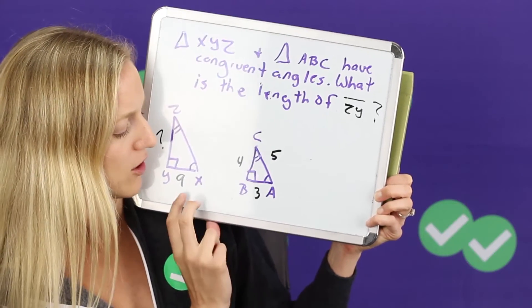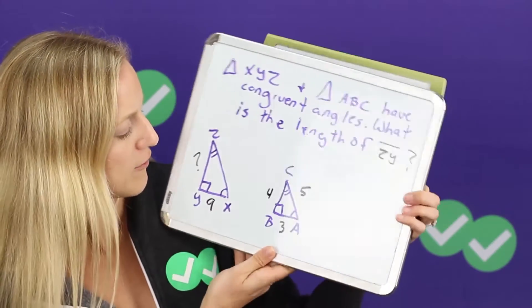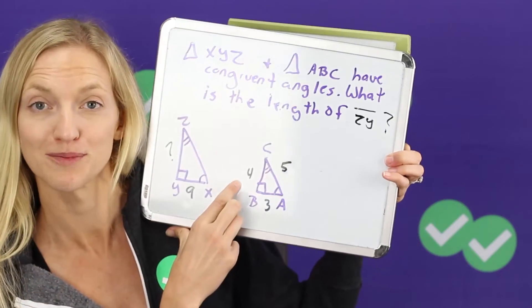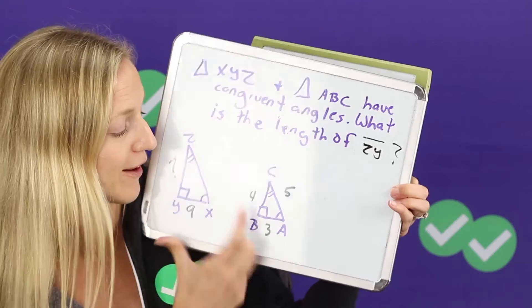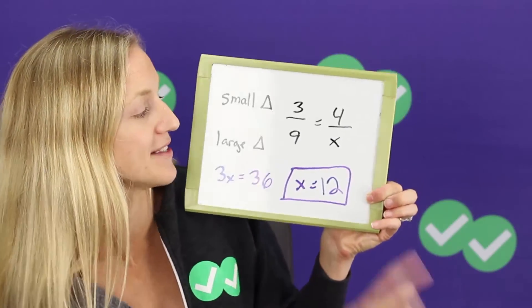So on the small triangle it's 3, on the large triangle is 9, so I have that set up there. And then I'm trying to figure out this one so I need to see the corresponding side right here and that's 4. So on the small triangle it's 4, on the large triangle I don't know what it is so I put an x there.